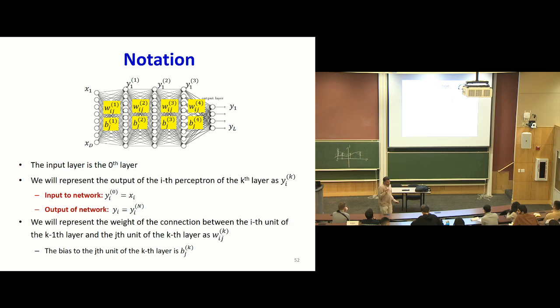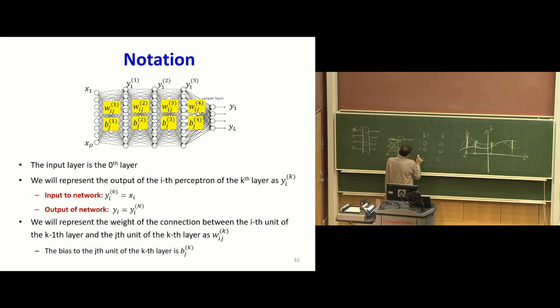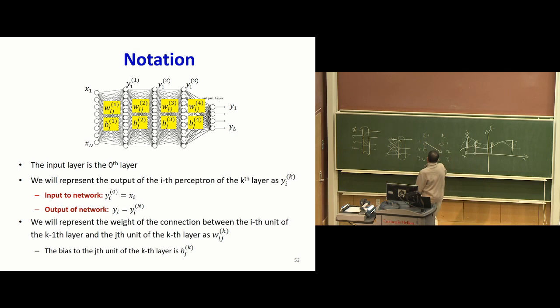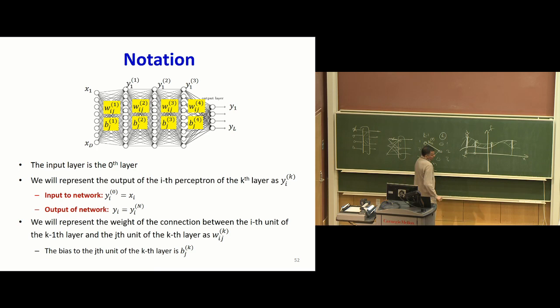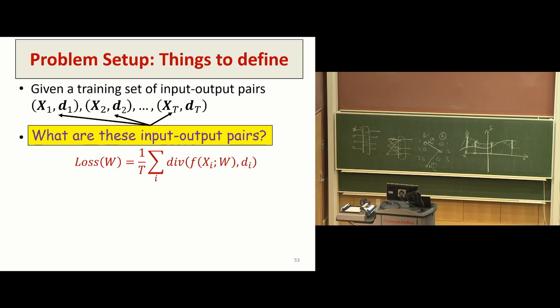So a vector activation is a generalization of a collection of scalar activations. You can think of every layer in a multilayered network as just one vector activation. A little bit of notation: at every point, I have a bunch of neurons; say the k-minus-1th layer and the kth layer numbered 1, 2, 3. The weight connecting neuron 1 in layer k-minus-1 to neuron 2 in layer k is represented as w_{1,2}^k, where the first index is the source neuron, second is destination, and superscript k is the layer index. Every neuron also has a bias, indexed by the neuron and layer.